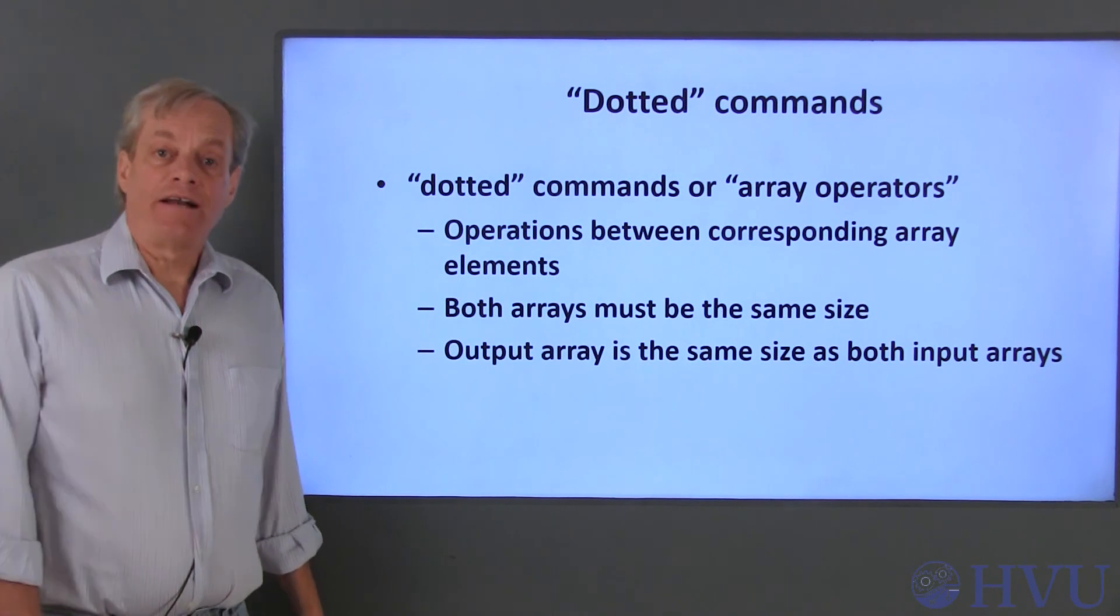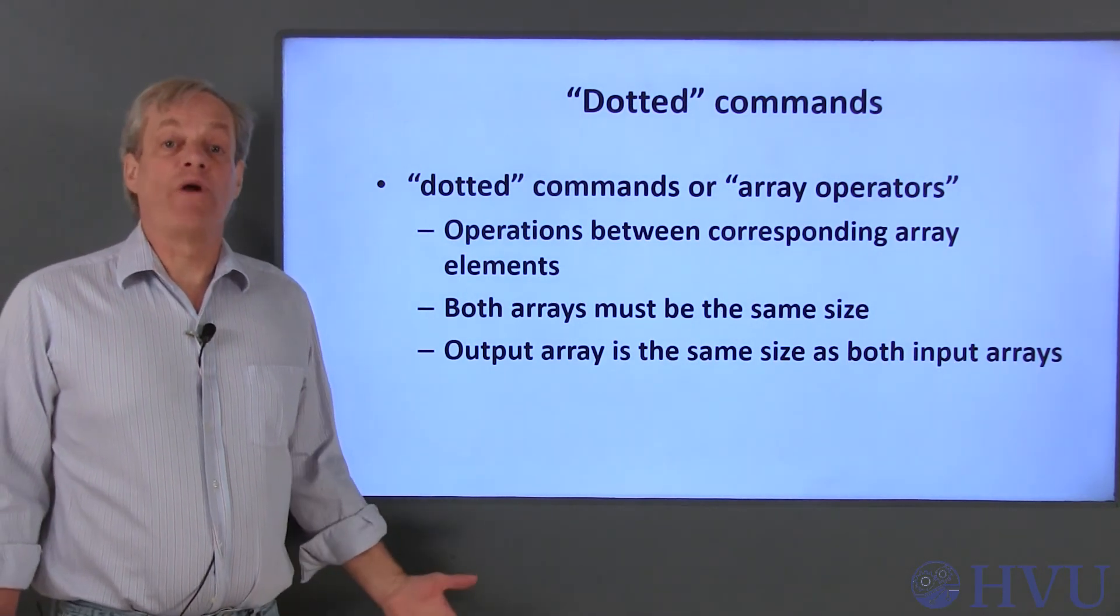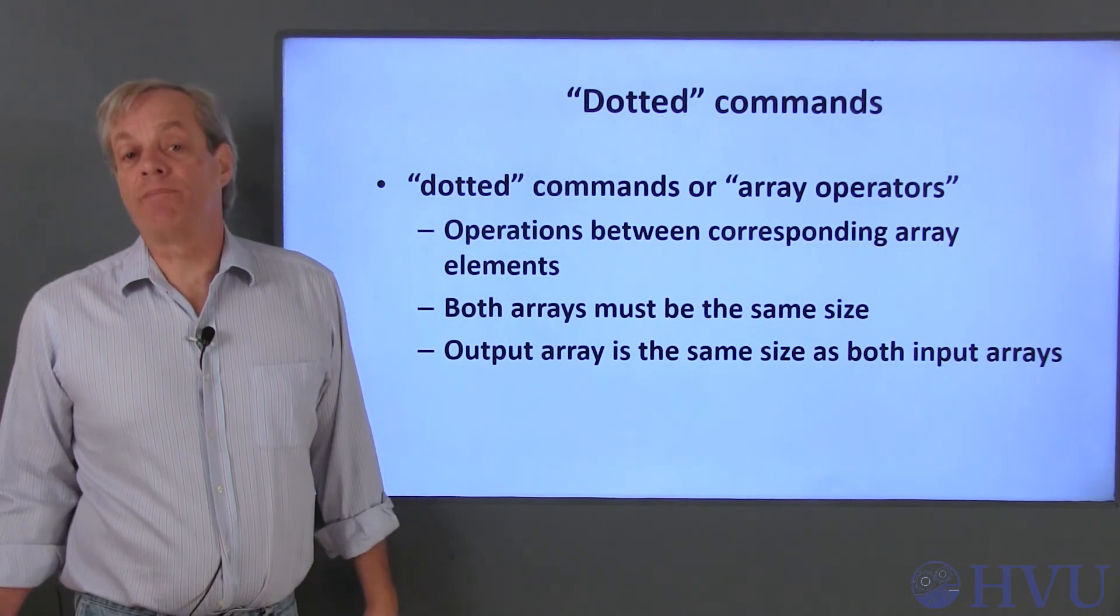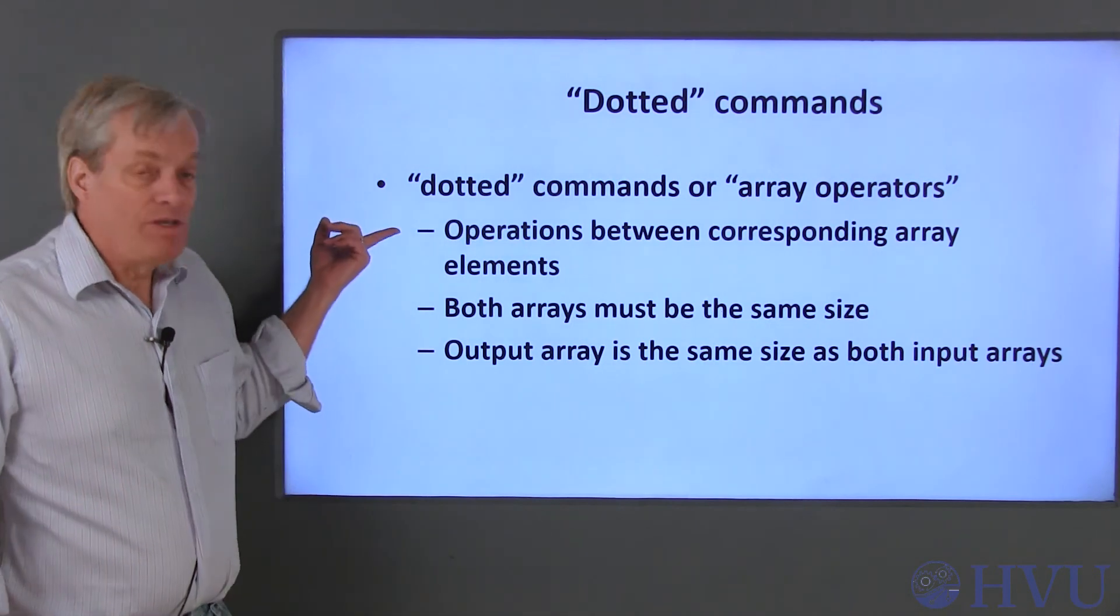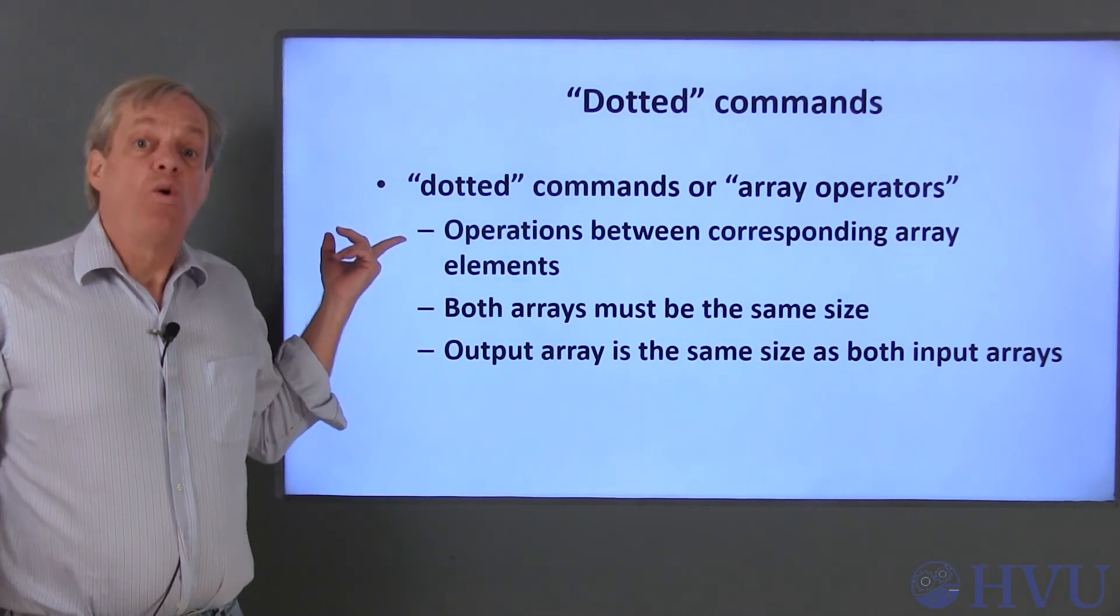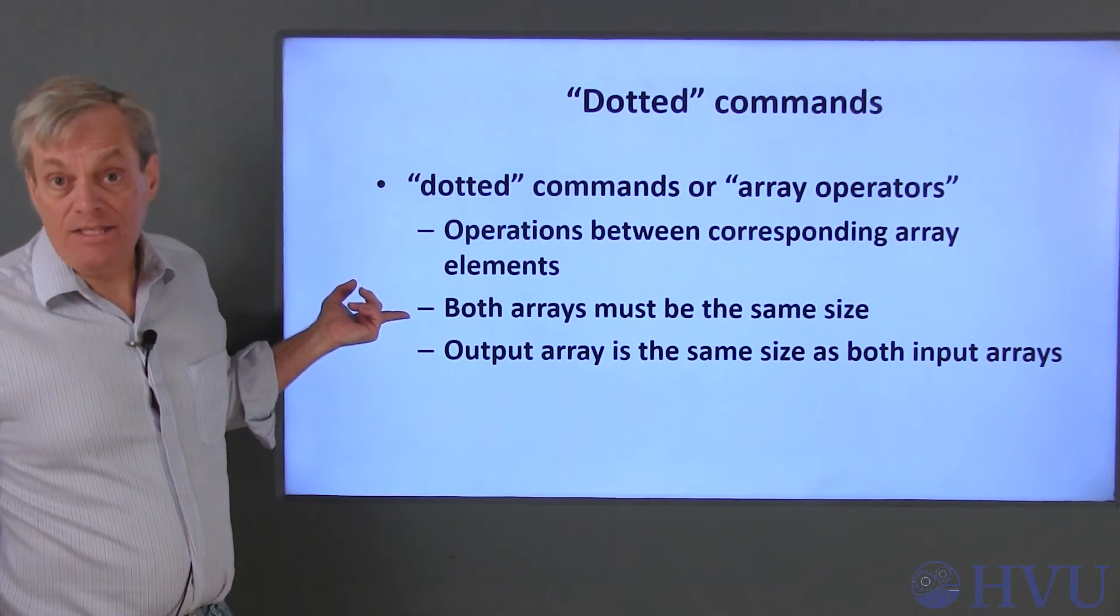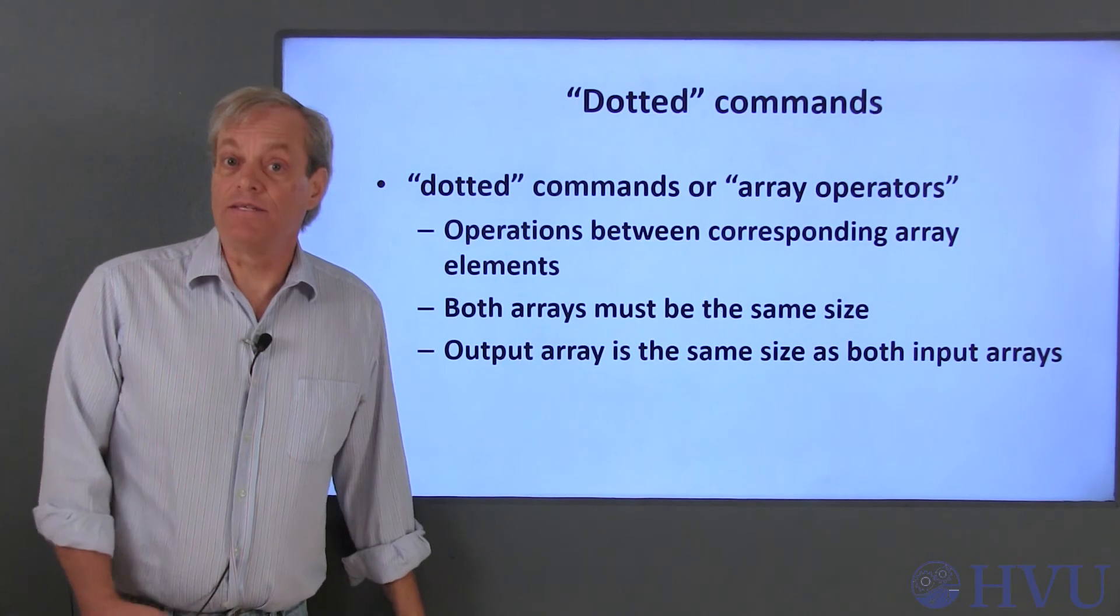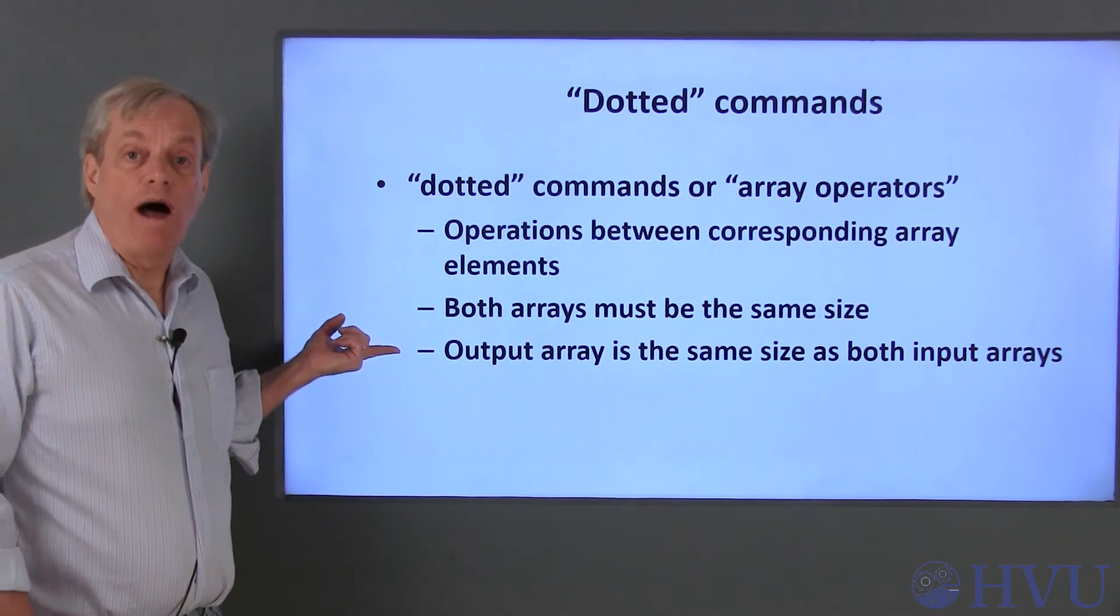In short, the dotted operators and the addition and subtraction operators perform what are called array operations or element by element operations. This simply means that the operations are performed between corresponding elements of the arrays being operated on, which implies that the arrays being operated on, the operands, must be the same size. The output array will also be the same size as the two operand arrays.